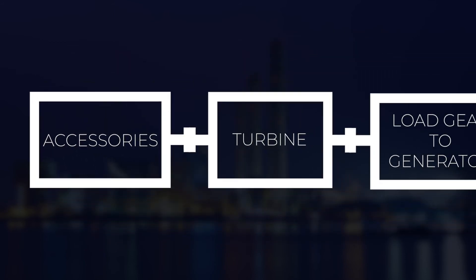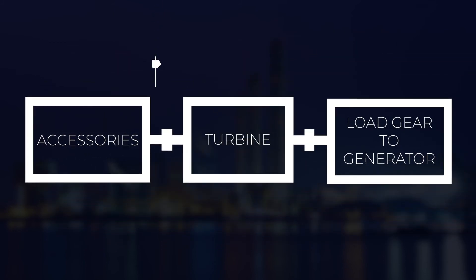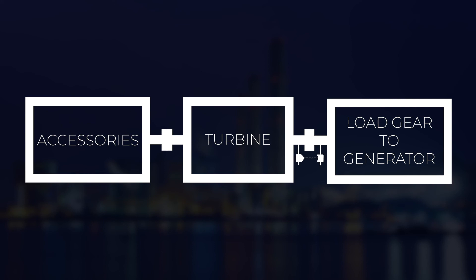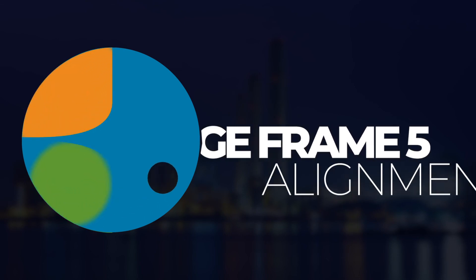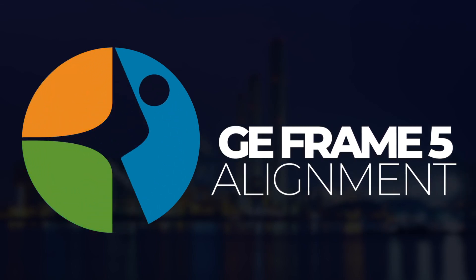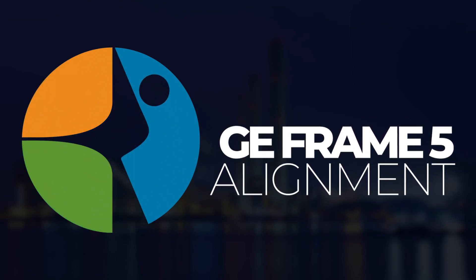Once that's finished, our alignment is complete. We must always take a last set of readings after we've moved anything, so that we always end on a reading instead of a move. This concludes our GE Frame 5 Alignment Overview video. Thank you for watching.